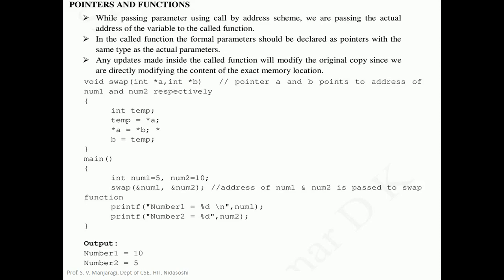Let us take one example to discuss about pointers and functions. In this particular program we are defining a function with pointers. This particular function is used to extract values of two integer variables using pointers. The return type of this particular function is void and this function is taking two parameters and both are pointers.